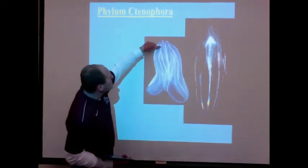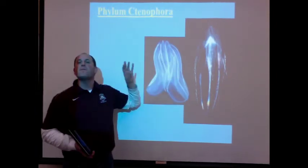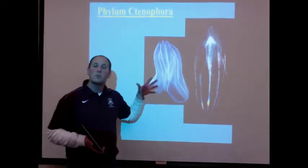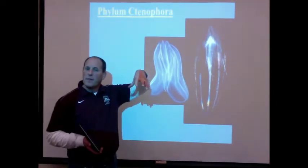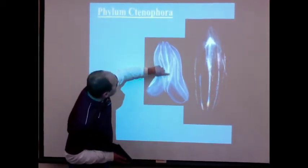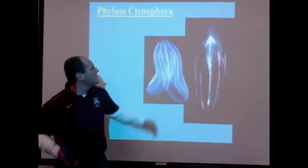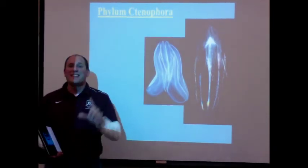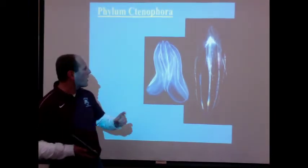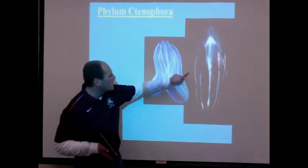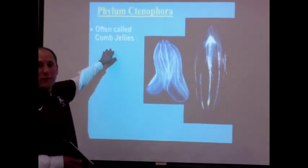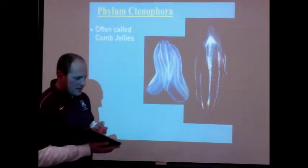All Ctenophorans have eight very distinctive rows of cilia — that's what all those little lines are. The interesting thing is that they swim not by pulsing but by moving the cilia, those eight rows, back and forth. In this picture you can see the rows clearly — there's one here, here, here, and one on this side, with two more in the back. These are the largest organisms that can swim or move around using cilia. They can be a few inches long, so we can actually see all the little cilia moving.